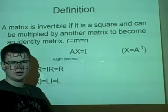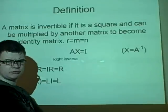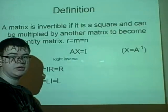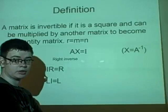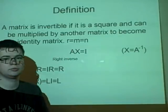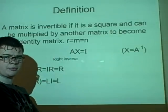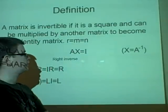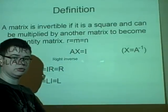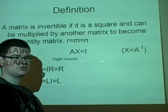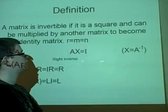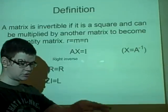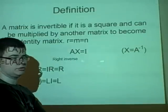First, the definition: a matrix, in order to have an inverse, must be square. The rank r, which I've represented from the last lecture, has to equal the number of rows and has to equal the number of columns. So if there's a line of zeros underneath, then it doesn't have an inverse.